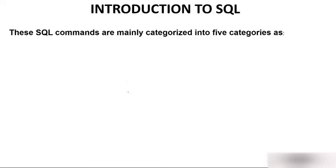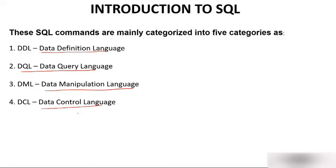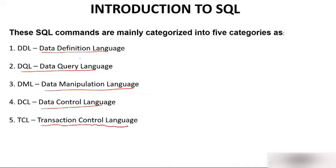SQL commands are mainly categorized into five categories. The first is DDL — Data Definition Language. The second is DQL — Data Query Language. The third is DML — Data Manipulation Language. The fourth is DCL — Data Control Language. And the fifth is TCL — Transaction Control Language.